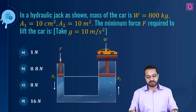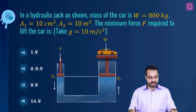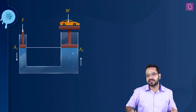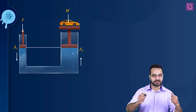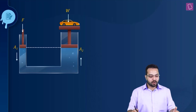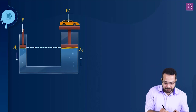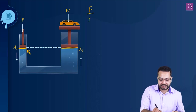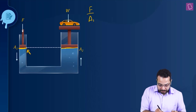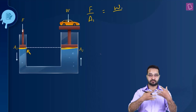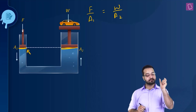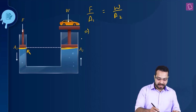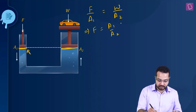In a hydraulic jack, the mass of the car is 800 kg, A1 is 10 cm², and A2 is 10 m². The minimum force F required to lift the car — the principle of a hydraulic jack is that pressure transmitted is the same across the entire fluid. So pressure at the input piston equals pressure at the output piston: F/A1 = W/A2. This is Pascal's law. Hence F equals (A1/A2) times W.